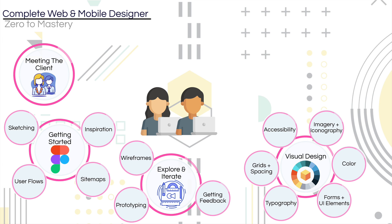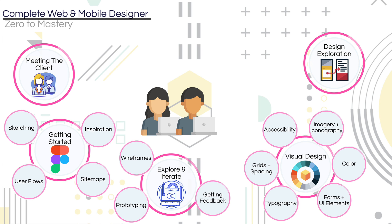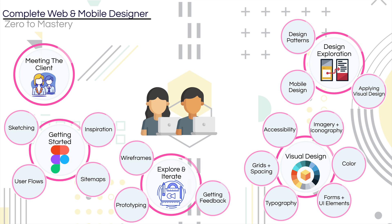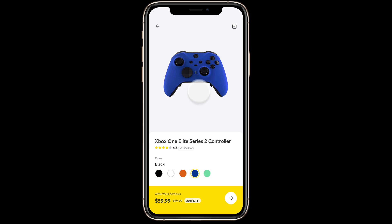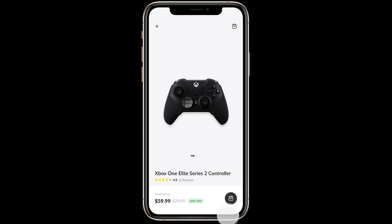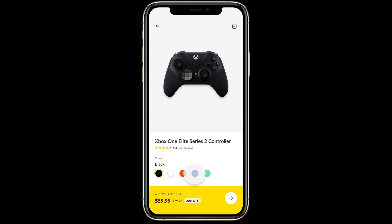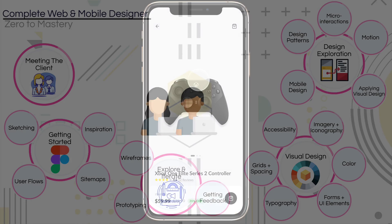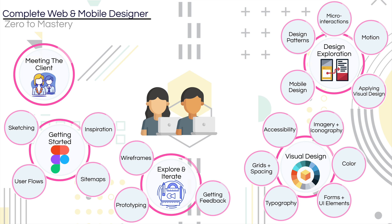Now that our product is starting to take shape, we then get into design exploration. This is where we talk about design patterns, mobile design, applying visual design, and motion and micro-interactions. This is where we make everything look really modern. We talk about best practices, the importance of motion and animations, and how we can make the user interact with our product in a way that is exciting to them and creates a good user experience.